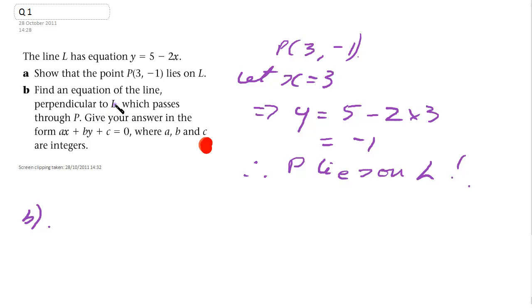So the first thing we need to do is find the gradient of the line. Well, we should know that if you've got the gradient of this line is, if you've got y equals 5 minus 2x, if we transform that into y equals mx plus c format, and m is the gradient. C is where it crosses the y-axis. So this is the gradient.